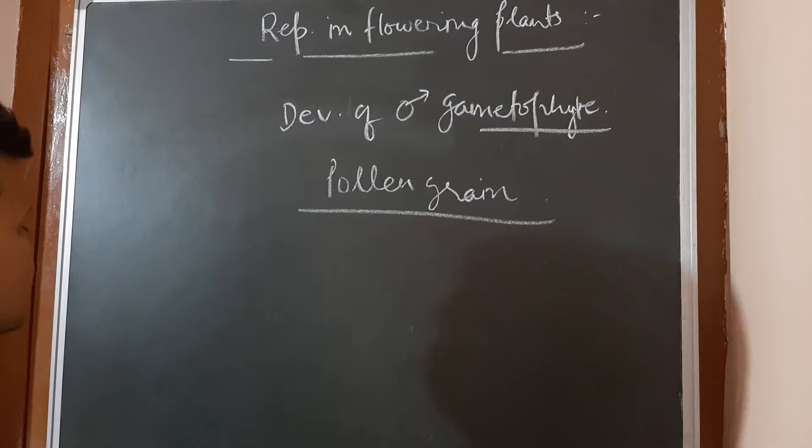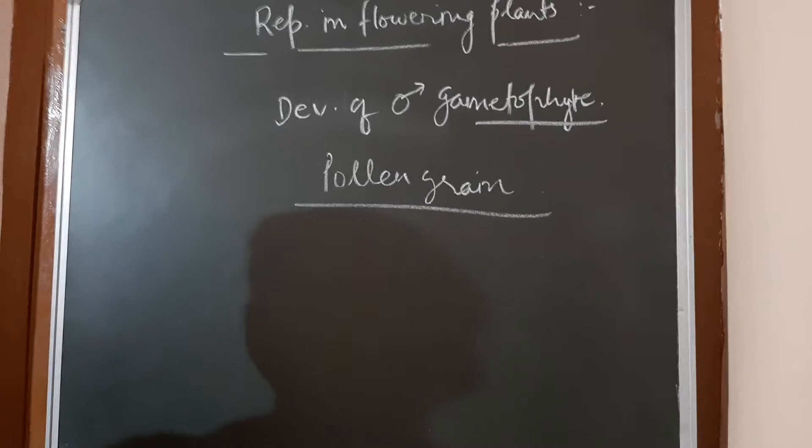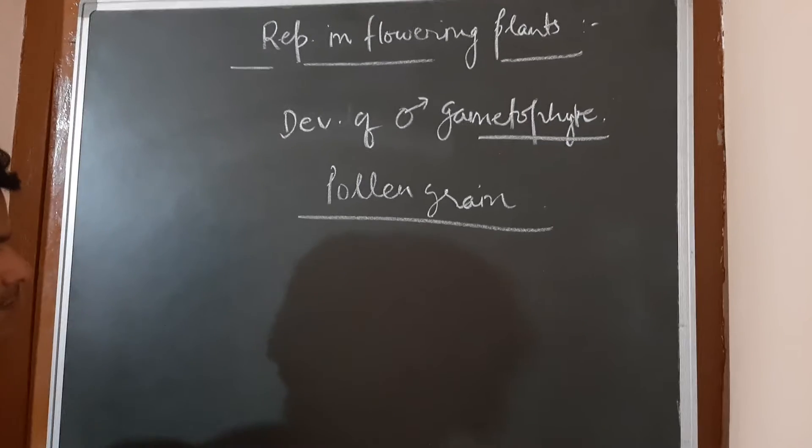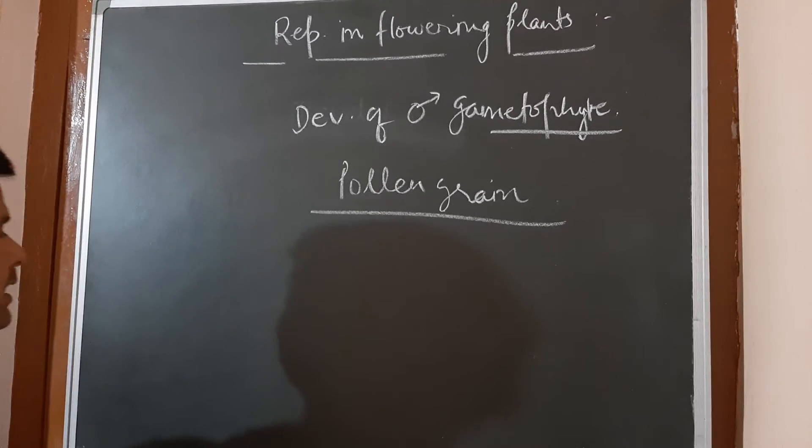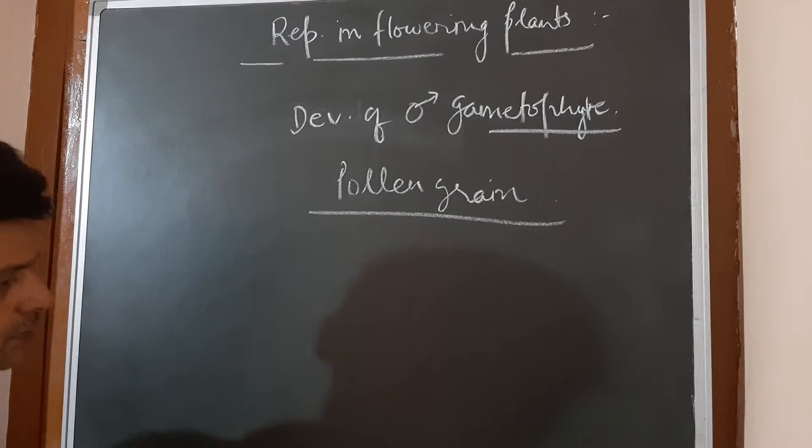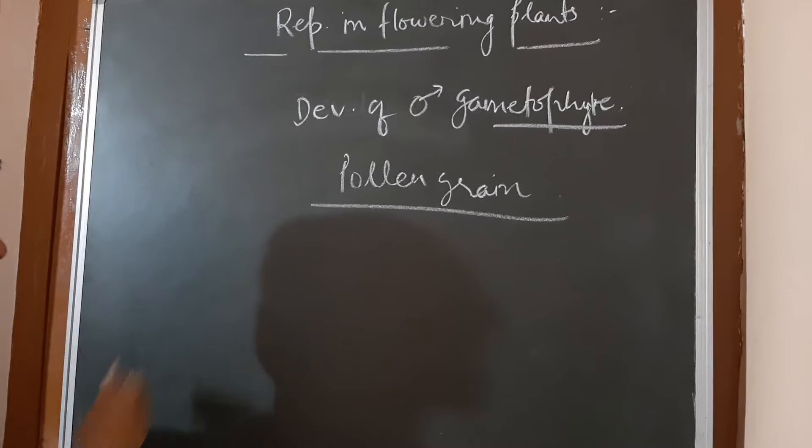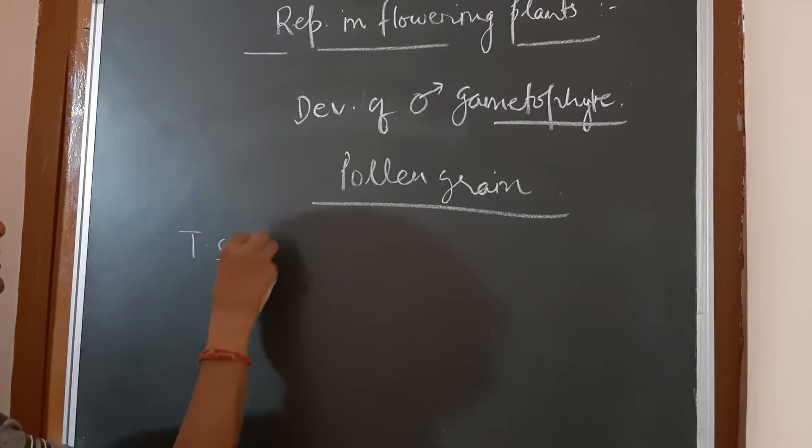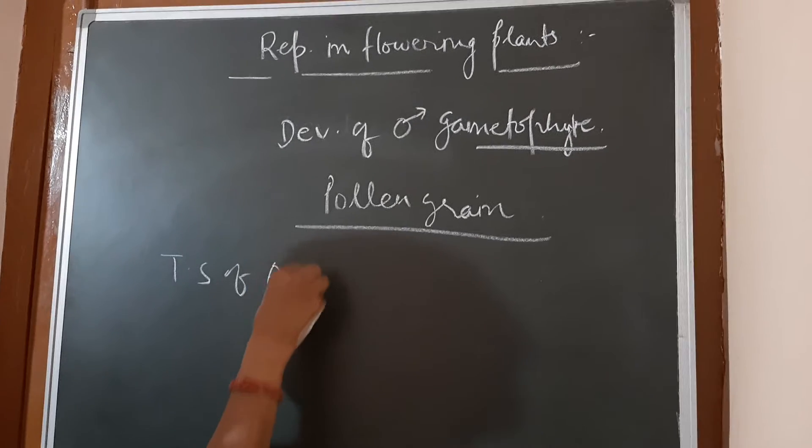We know that there are microsporophyll which is the male reproductive structure. And in the microsporophyll there are microsporangia or the pollen sac. This we have seen during the T.S. of anther. We go through the diagram of T.S. of anther.